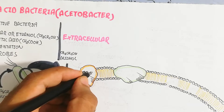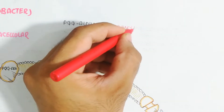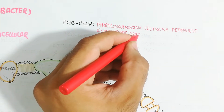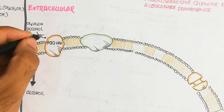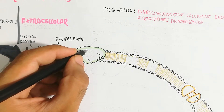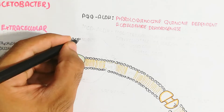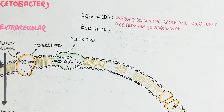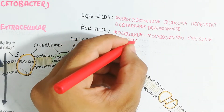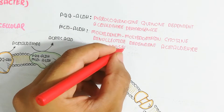The extracellular reaction is carried out by PQQADH — pyrroloquinoline quinone-dependent alcohol dehydrogenase — which is embedded in the plasma membrane and converts ethanol to acetaldehyde. Then MCDALDH — molybdopterin cytosine dinucleotide-dependent aldehyde dehydrogenase — converts acetaldehyde into acetic acid.